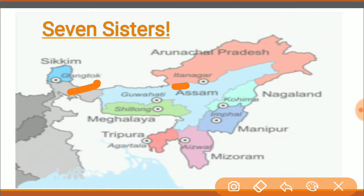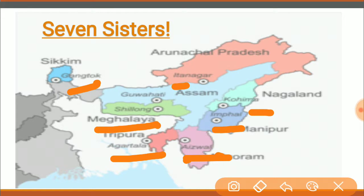Itanagar is the capital of Arunachal Pradesh. Kohima is the capital of Nagaland. Imphal is the capital of Manipur. Aizawl is the capital of Mizoram. Agartala is the capital of Tripura. Shillong is the capital of Meghalaya — as you know, Meghalaya is also the state where the largest amount of rainfall occurs, both in India and all over the world.